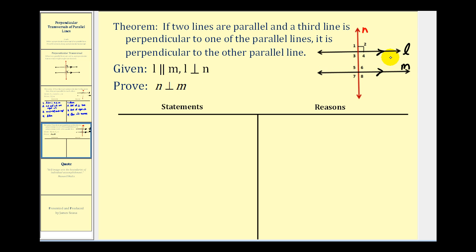Let's talk strategy. We know if L and N are perpendicular, angles one through four are right angles, and therefore they measure 90 degrees. And then if we know line L and M are parallel, we know that corresponding angles must be congruent. So angles one through four are congruent with angles five through eight, which means they have the same measure. So if the measure of angles one through four equals the measure of angles five through eight, they must measure 90 degrees, and therefore they're right angles, and therefore N and M would be perpendicular.